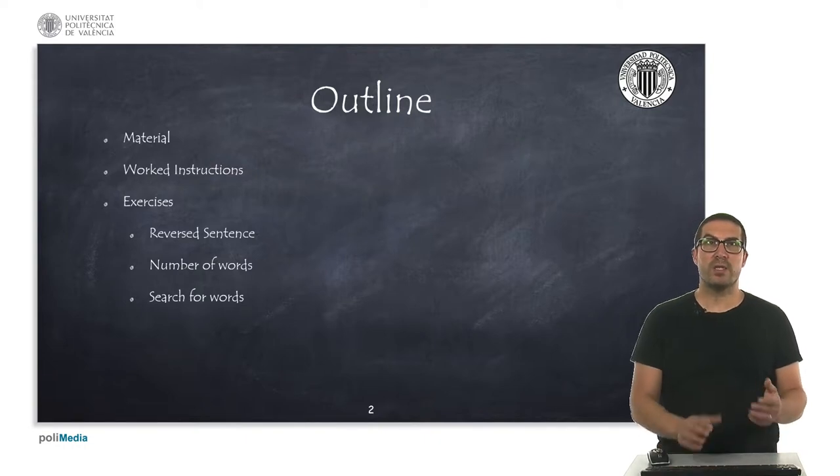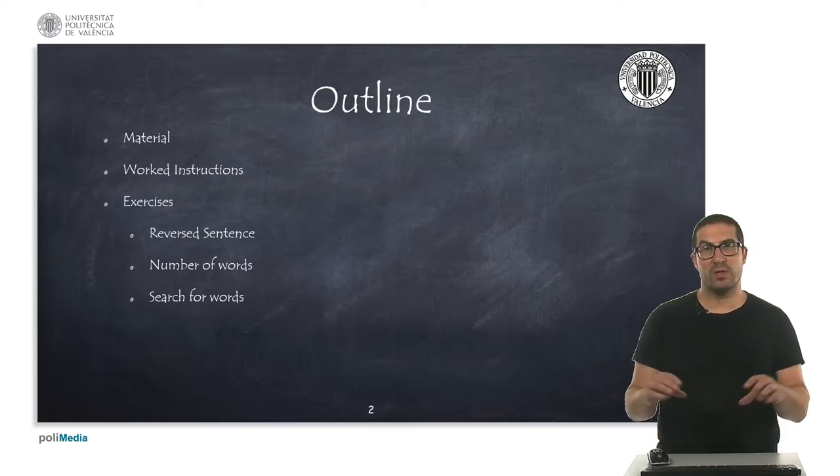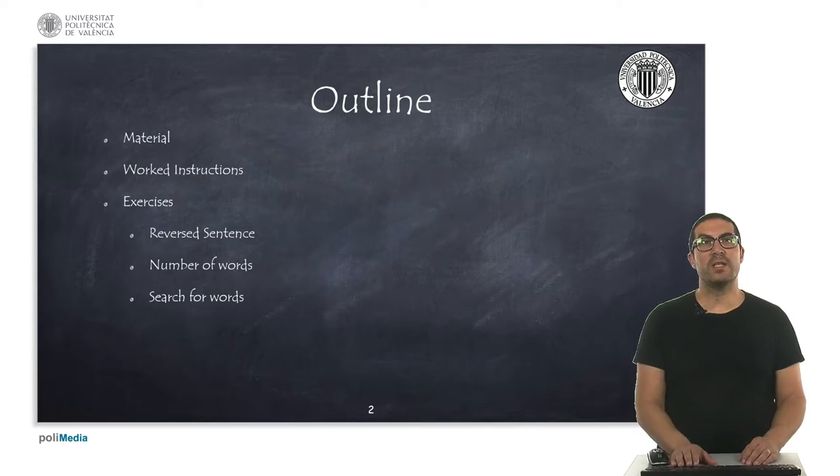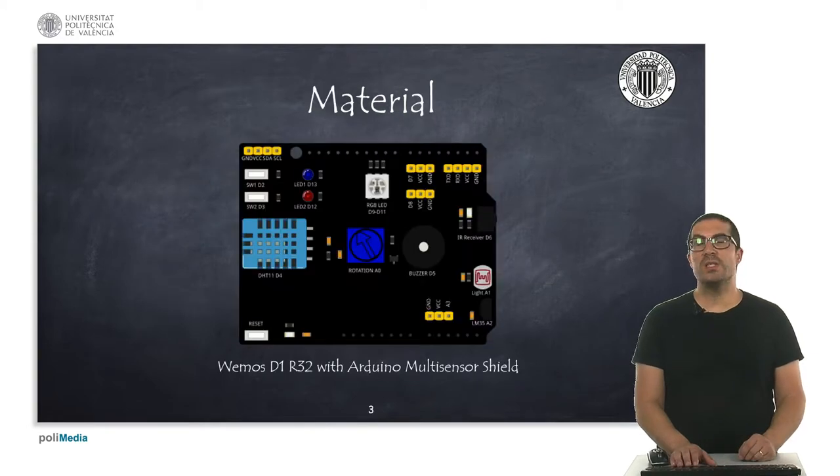The first one is related with reversing the characters of a sentence. The second one is used to count the number of words of a whole sentence, and then the third one, we will search for specific words on a sentence. This is the material that we will use for this presentation. As usual, it's the Wemos D1 R32 together with the Arduino Multicensor Shield.